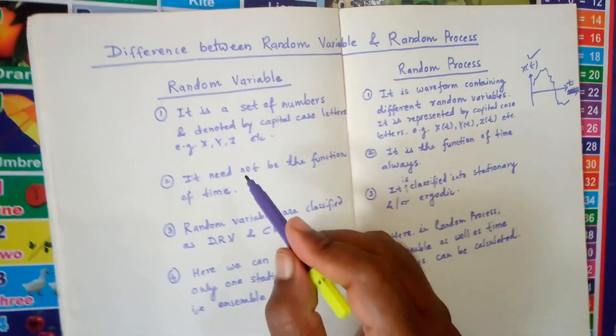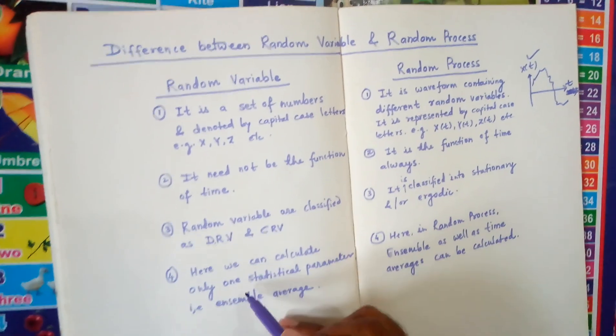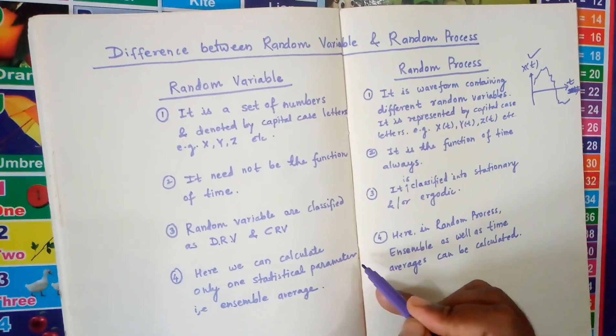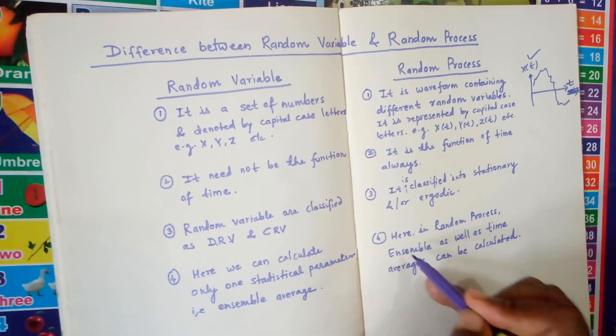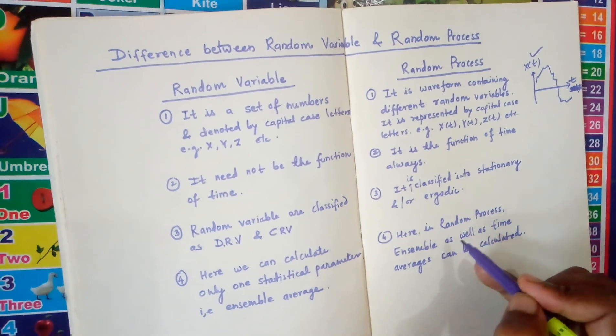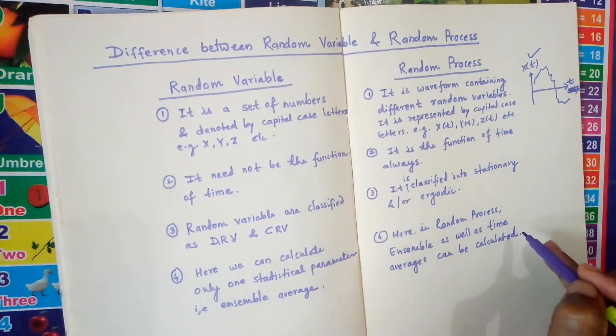Number 4: In random variable we can calculate only one statistical parameter, that is ensemble average. But in case of random process we can calculate ensemble as well as time average.